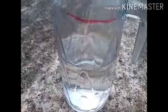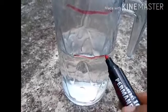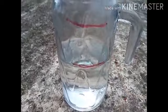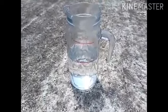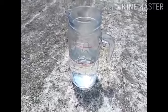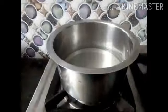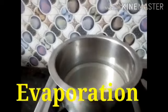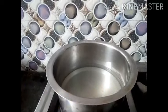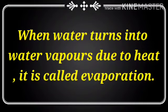It comes down. Let us mark the water level. Do you know where the water has gone? Has anybody drunk it? No — that water turns into water vapor in presence of sunlight. When water changes into water vapor, we call it evaporation. When water turns into water vapor due to heat, it is called evaporation.